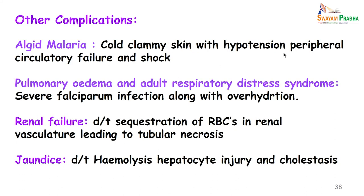Other complications include algid malaria, pulmonary edema, and ARDS with P. falciparum. Renal failure can result from sequestration of RBCs in the renal vasculature leading to tubular necrosis. Jaundice may occur due to hemolysis, hepatocyte injury, and cholestasis.